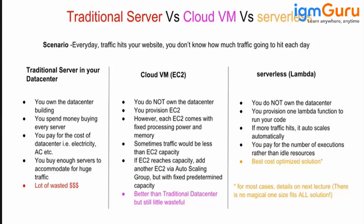For example, if I take a t2 micro it is 1 GB RAM and 1 core CPU, but my work only needs 300 MB — so the other 700 MB is wasted. Scenario 2: if I get an M4 large with 8 GB but I only need 6.3 GB, then 1.7 GB is always getting wasted.